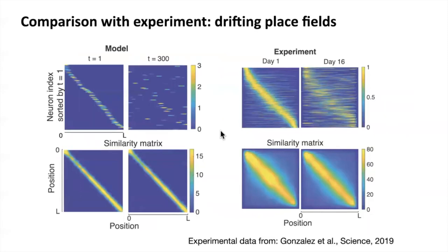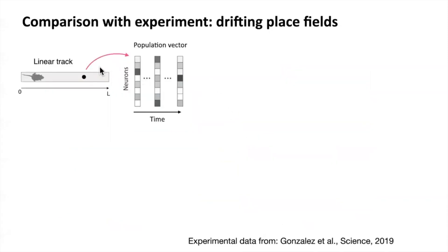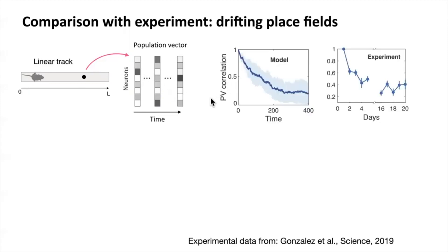To make a direct comparison with existing experiments done using linear 1D environments, we train our model on a linear track environment. After learning, you can see neurons develop localized place fields to tile the linear track, and they drift over time. Despite such drift, the representation similarity matrix of pairwise positions is stable over the simulation time, and this qualitative behavior has also been observed experimentally. We also look at the population vector corresponding to a specific location. Due to drift, this population vector continually evolves over time, as quantified by the autocorrelation coefficient which decays over time, and this is also observed in experiments.